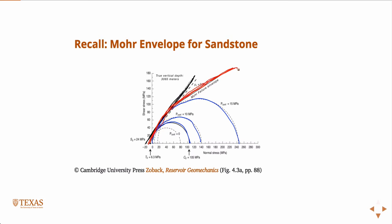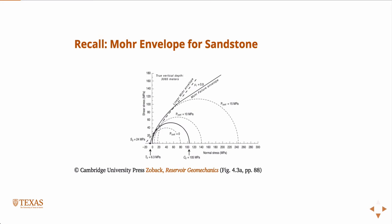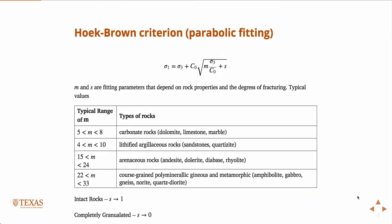But if we go back and say we want a little bit better model, we could try to fit that line differently. If you extend that line — the one I'm drawing in red here — it sort of looks like a parabola. So we could possibly have a little bit better approximation if we fit a parabola instead of a straight line. If we do that, there's a model called the Hoek-Brown criteria, which is just a parabolic fitting.